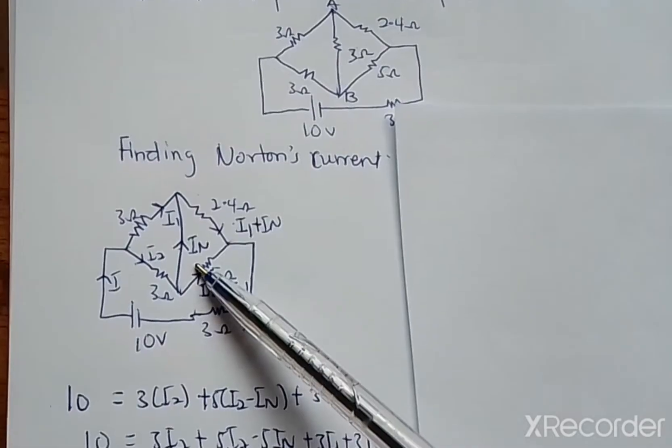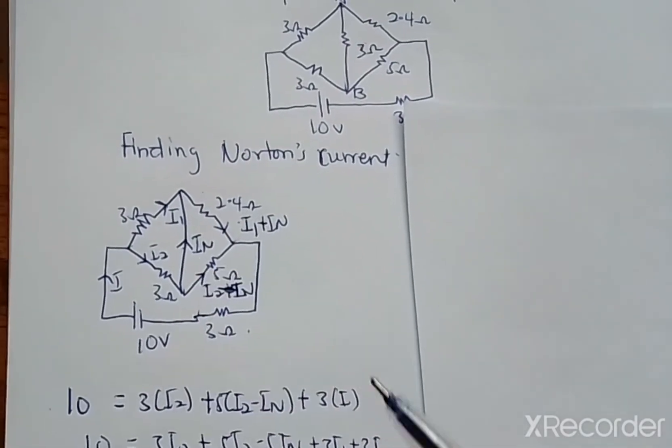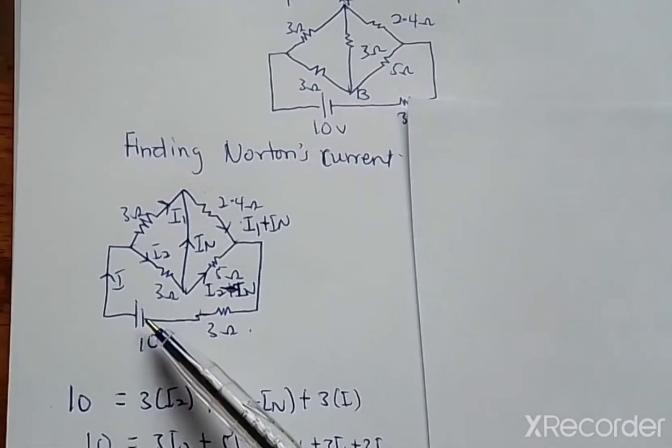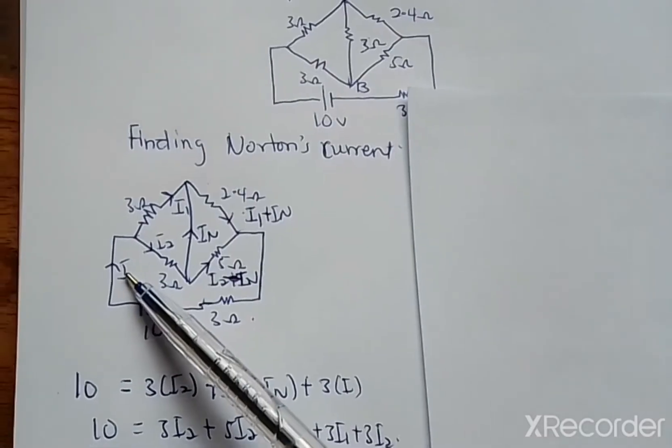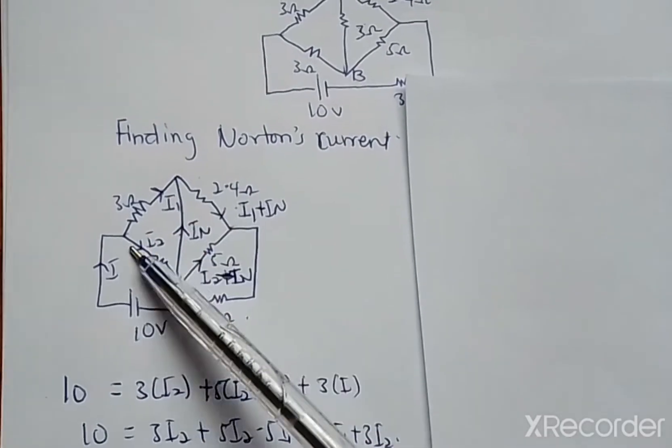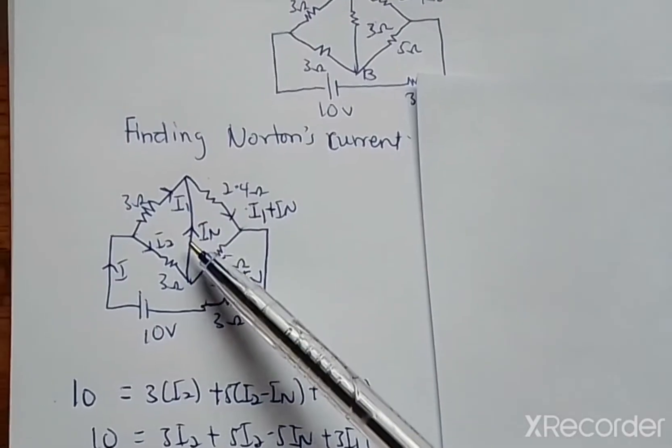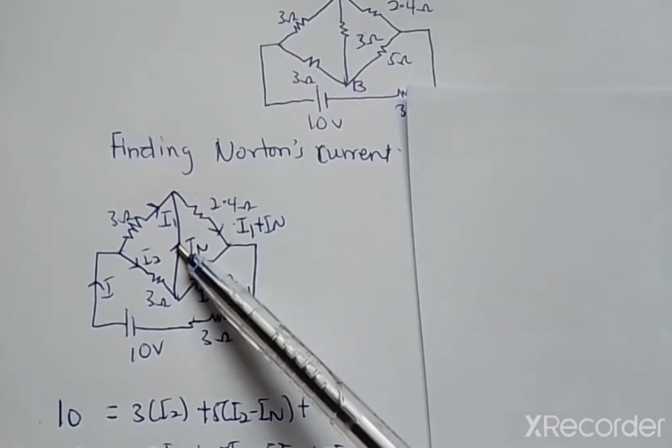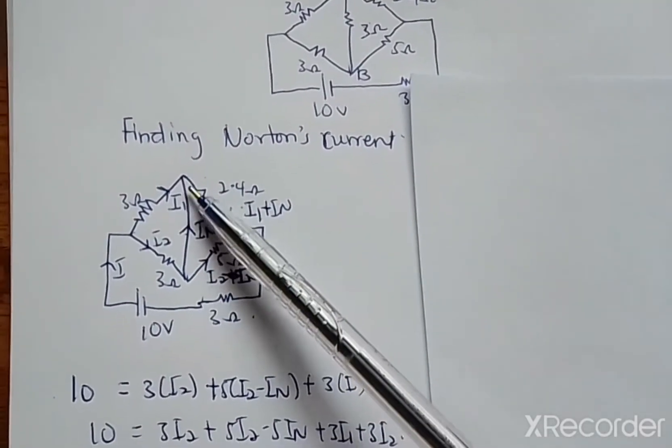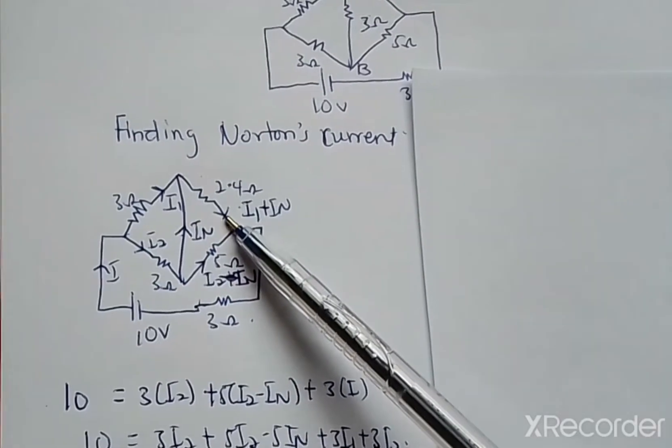This is the Norton current, IN. From here we know that the source produces a total current I, which splits into I1 and I2 at this junction, and we introduce our IN. You can see that at this junction, IN plus I1 will produce the current that will pass through the 2.4-ohm resistor.